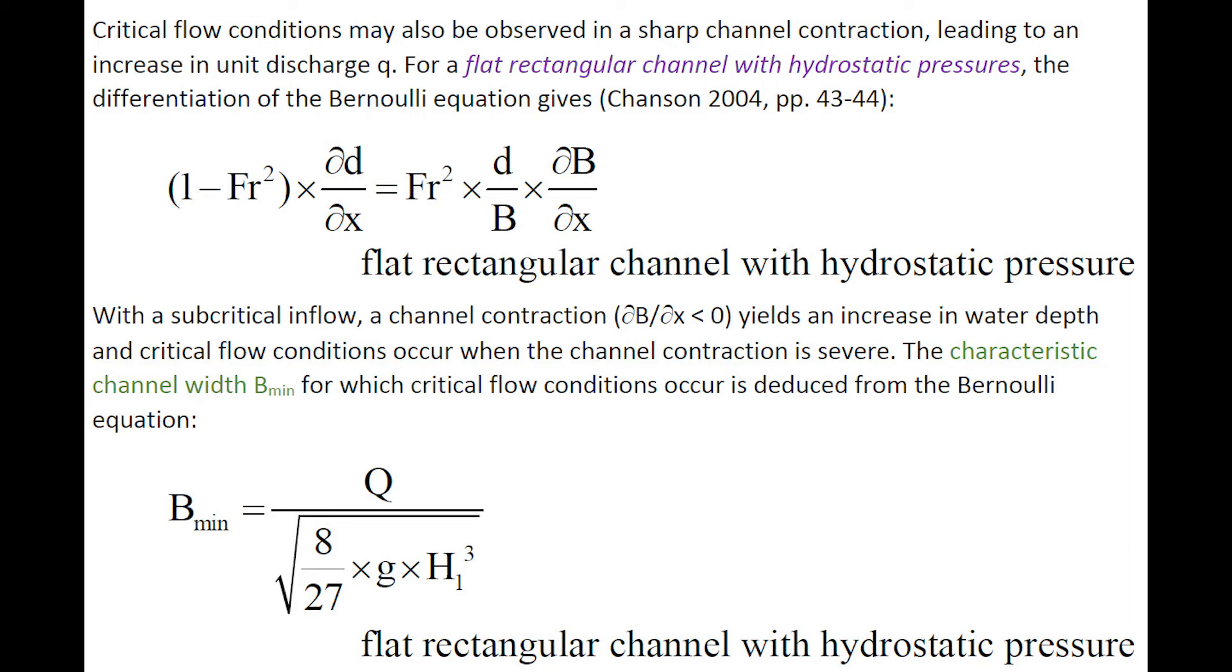Critical flow conditions may also be observed in a sharp channel contraction leading to an increase in unit discharge. For a flat rectangular channel with hydrostatic pressure, the differentiation of the Bernoulli equation gives this expression linking the variation with distance of the water depth with the variation with distance of the channel width B.